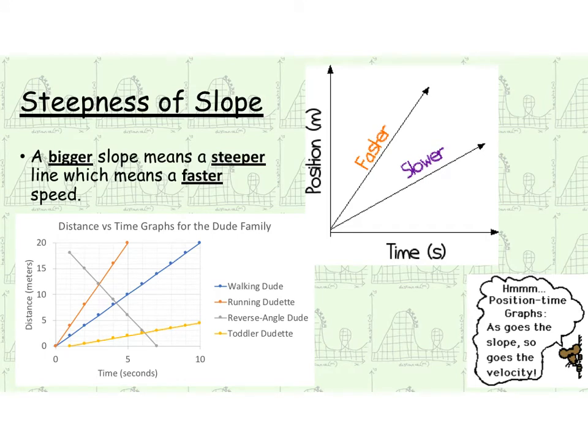Here's a much prettier computer-generated one. So if you look over here, you can see walking dude, reverse angle dude, we've got toddler down here, and then we've got our running dudette up there. And so basically the whole point is that the larger the slope, the bigger the number, or the steeper it is, the faster the velocity is, the more quickly that it is traveling per every second of time. So the steeper it is, the faster it is. And the least steep or more horizontal trending means that it's slower.